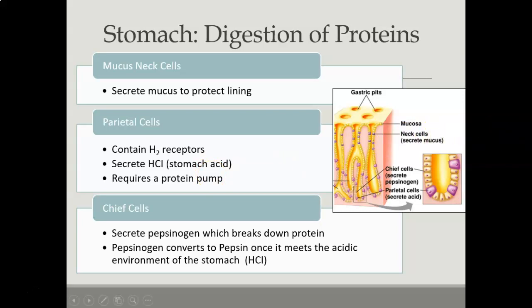There are several secretory cells in the stomach that play various roles. The mucus neck cells secrete thin, acidic mucus. The parietal cells secrete hydrochloric acid, and they're also needed to activate protein-digesting enzymes called pepsin. The chief cells secrete pepsinogen, the inactive proenzyme form of pepsin. Hydrochloric acid is necessary for the conversion of pepsinogen to pepsin. They all play a role in one another in a cascade kind of order.